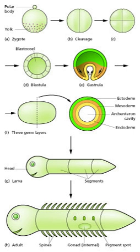Cell differentiation is the process whereby different functional cell types arise in development. For example, neurons, muscle fibers, and hepatocytes are well-known types of differentiated cell. Differentiated cells usually produce large amounts of a few proteins required for their specific function, giving them a characteristic appearance recognizable under the light microscope. The genes encoding these proteins are highly active.